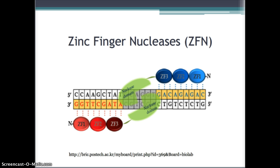The first technique is zinc finger nucleases, also known as ZFN. It was one of the first nucleases used for editing. These nucleases are nonspecific DNA cutting enzymes with a specific DNA sequence recognizing peptide. There are three zinc fingers in a nuclease that act as transcription factors. Each finger can identify three base pairs of a sequence, thus totaling nine base pairs. Each finger module can be mixed into different combinations to target any sequence you wish.